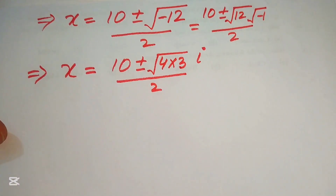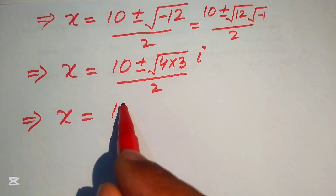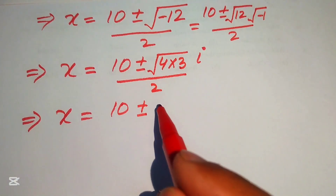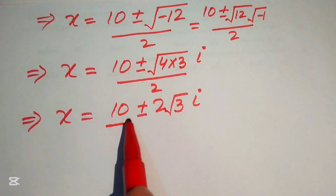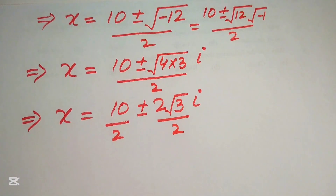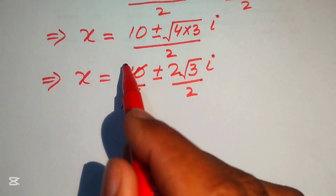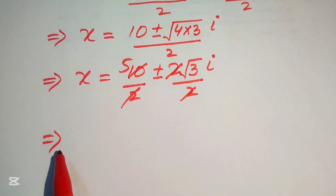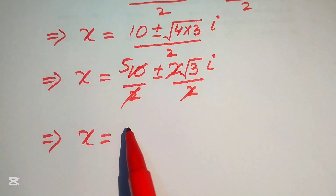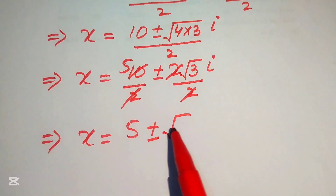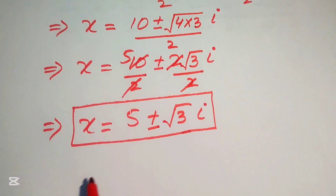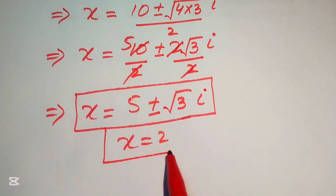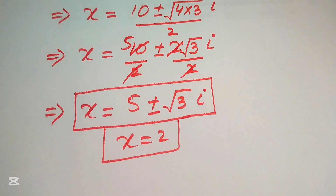So x = (10 ± 2√3·i) / 2. Dividing both terms by 2, the two complex roots are x = 5 ± √3·i. Therefore the three roots of the equation are: one real root x = 2, and two complex roots x = 5 ± √3·i. Thank you for watching — please subscribe for more videos.